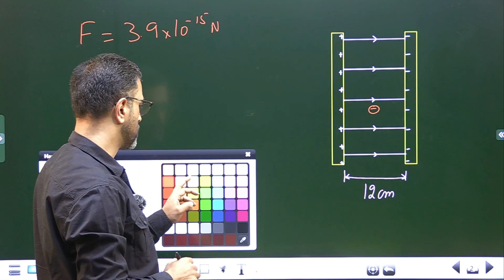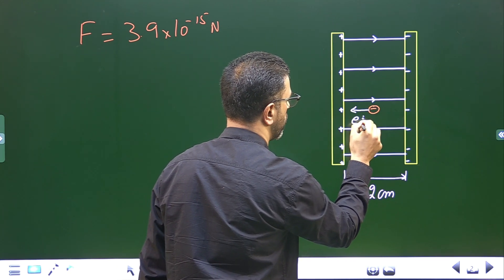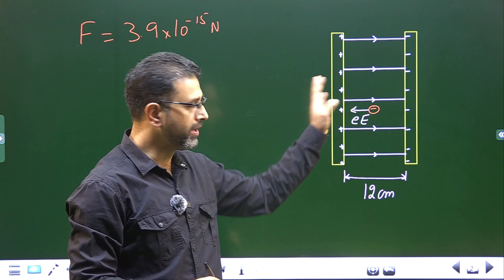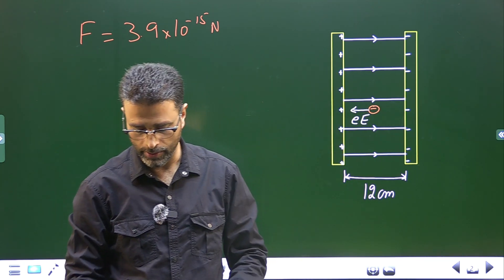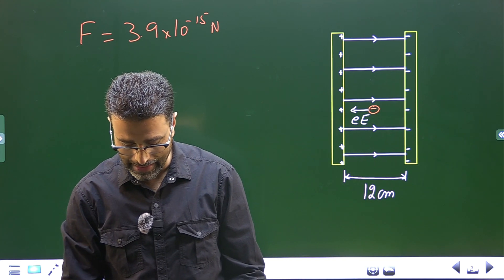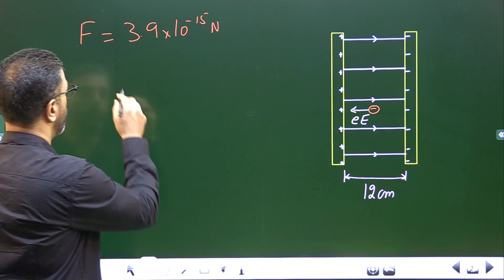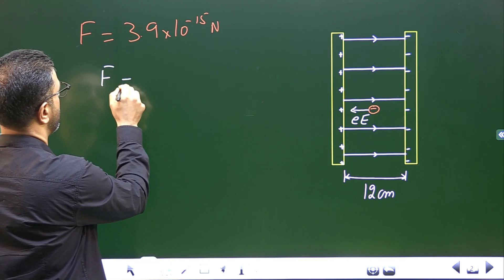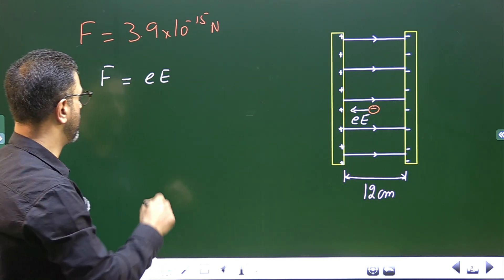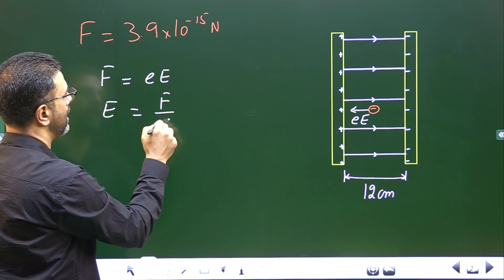This electron will experience a force opposite the direction of the field, and that force will be equal to e into E, e being the charge of the electron and capital E being the electric field between the plates of the capacitor. So we have to find the electric field and then the potential difference between the two plates. Electric force is given by e into E — magnitude of the electric force equals charge into the electric field — so that means E equals F divided by little e.